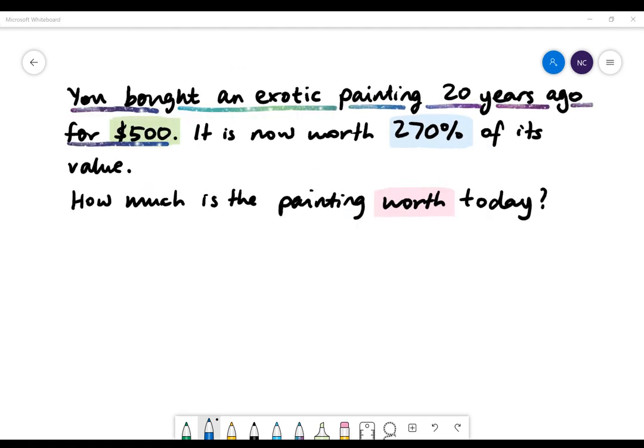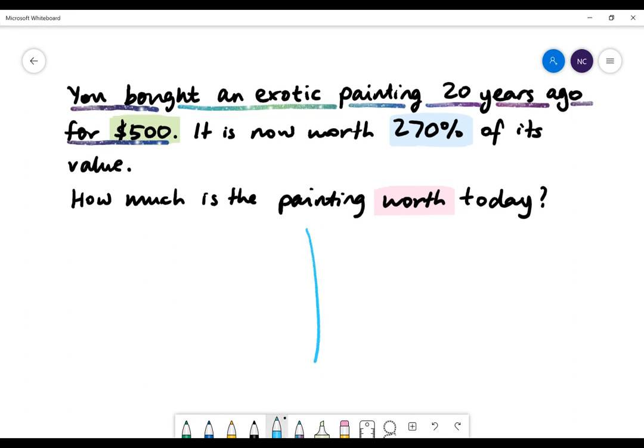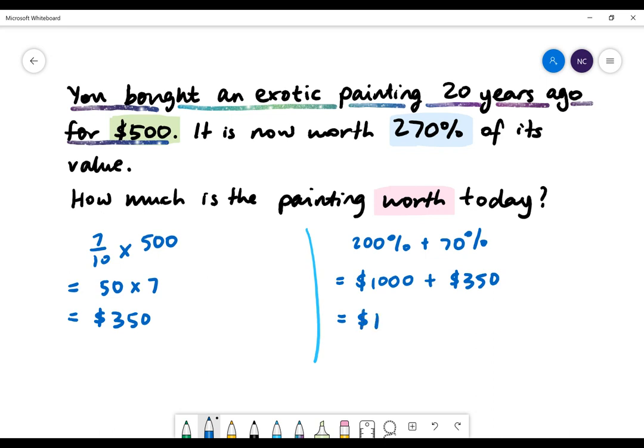Here is our final example. You bought an exotic painting 20 years ago for $500. It is now worth 270% of its value. How much is the painting worth today? It is important to understand that 270% is the same as 200% plus 70%. 200% is double $500, that will give us $1,000. So we need to find what 70% of $500 is. 70% is 7 on 10. So we need to multiply 7 on 10 by 500. 500 divided by 10 will give us 50. So we'll do 50 multiplied by 7, which is $350. Add $1,000 by $350, which will give us our answer, which is $1,350.